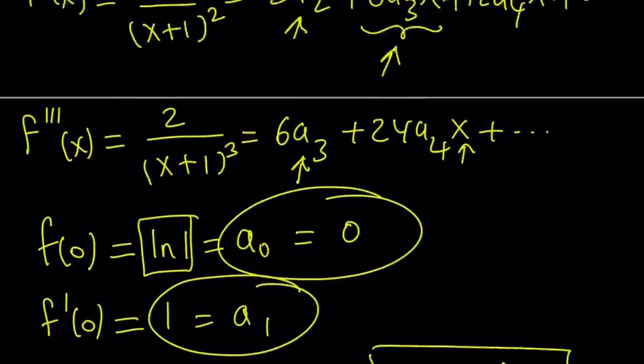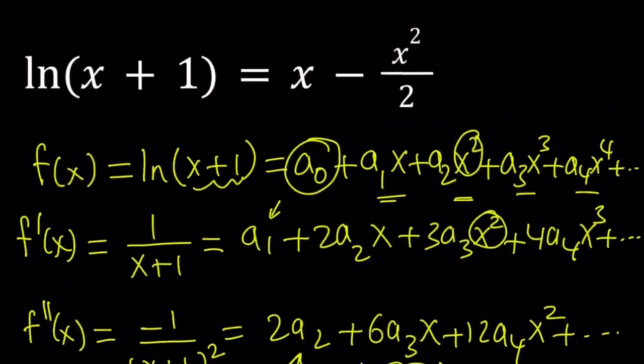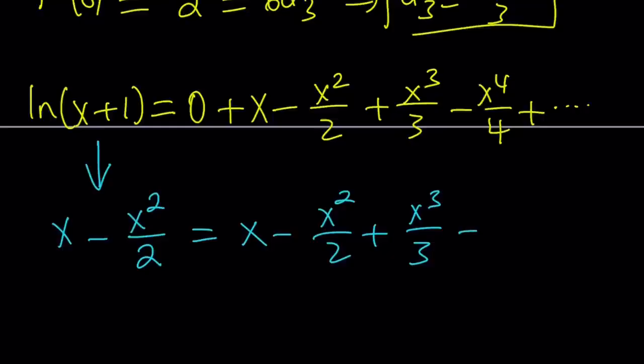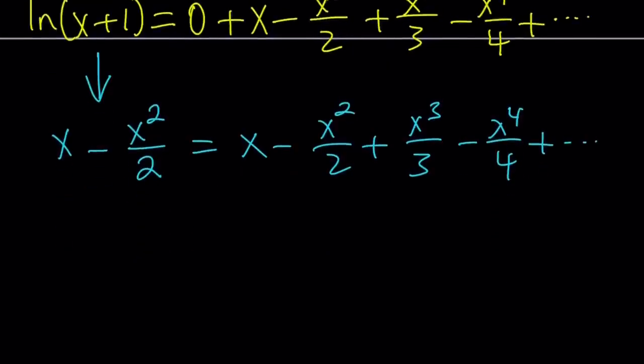Remember, the original equation gave us ln(x+1) equals x minus x²/2. So I'm going to replace ln(x+1) with x minus x²/2, because that's what's given in the original problem. And the right-hand side is an infinite polynomial. We have to write all the terms. But notice that we have the x minus x²/2. That's actually the motivation behind this problem.